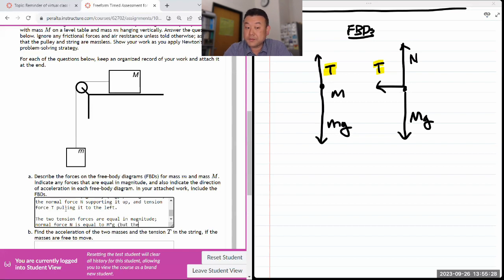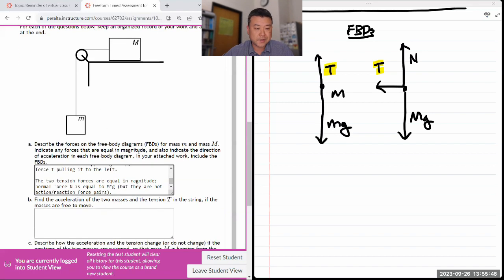So with that, let me describe the forces. For the hanging mass m, there are two forces on the free body diagram: gravity mg pulling it down and tension force T pulling it up. For the mass M on the table, there are three forces on the free body diagram: gravity M times G pulling it down, the normal force N supporting it up, and tension force T pulling it to the left. The two tension forces are equal in magnitude. And I guess if you miss this next description, it might be fine.